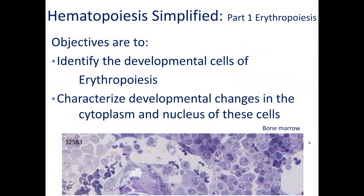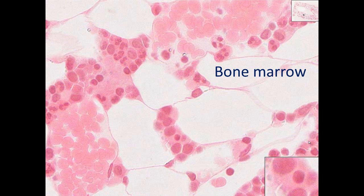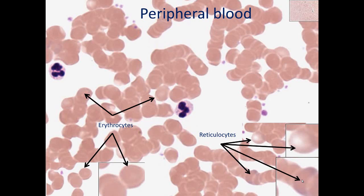Part one: we want to identify the developmental steps of erythropoiesis and characterize developmental changes in the cytoplasm and nucleus of these cells. Erythropoiesis occurs in the bone marrow. Here we can see red blood cells and white blood cells in blood itself, including a neutrophil. Development occurs in groups of cells outside the vasculature, including what we identify later as an orthochromatic erythroblast.